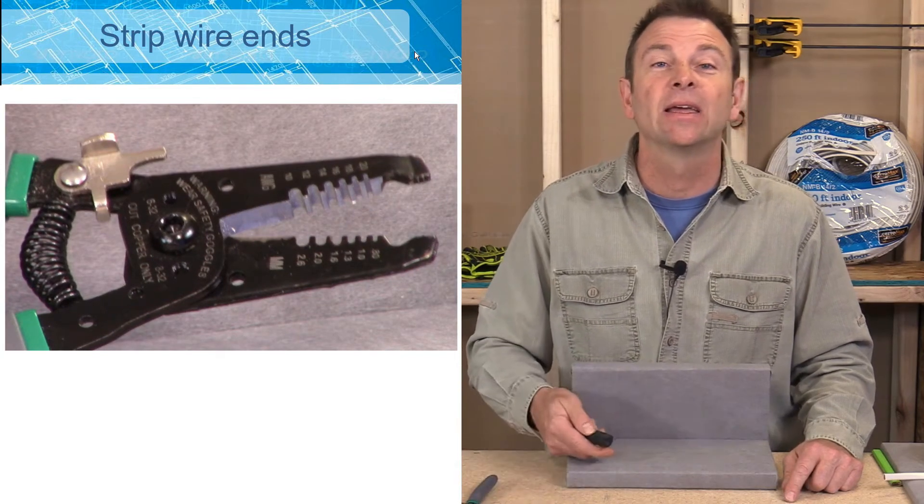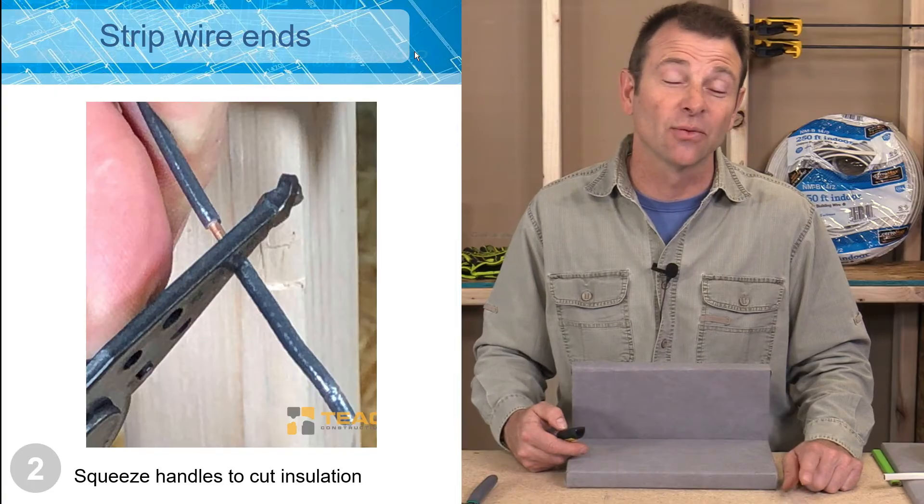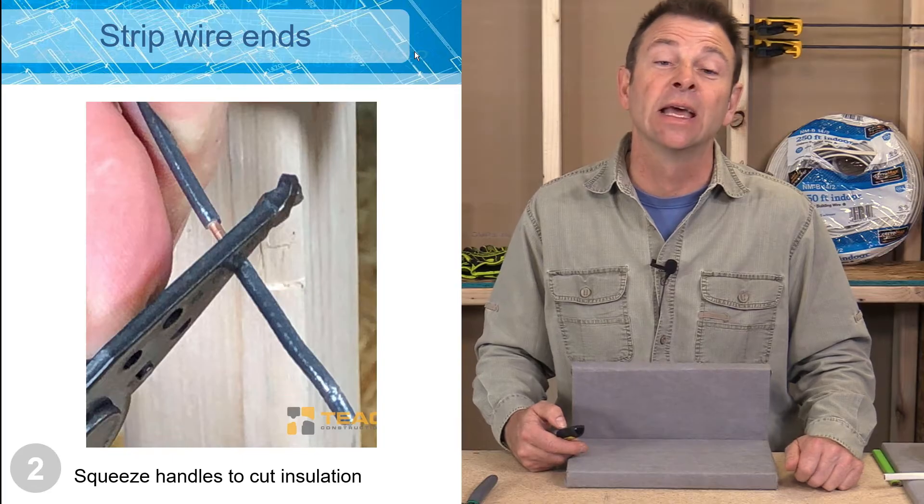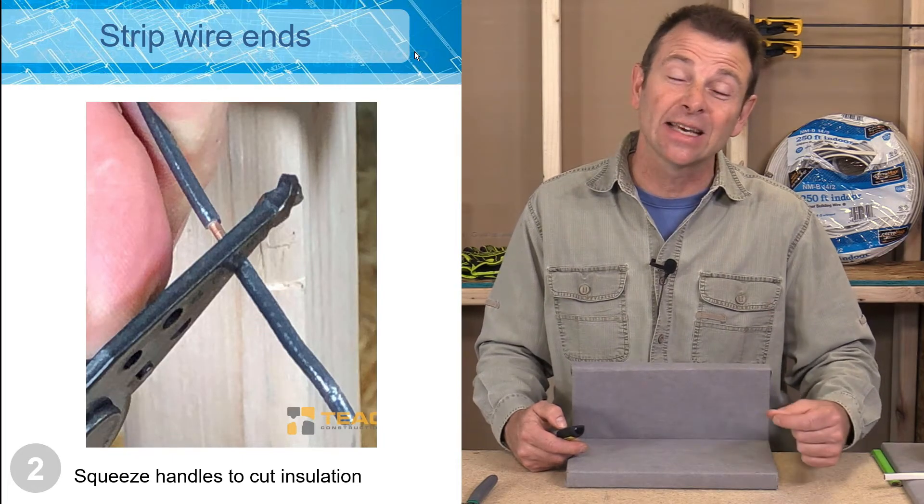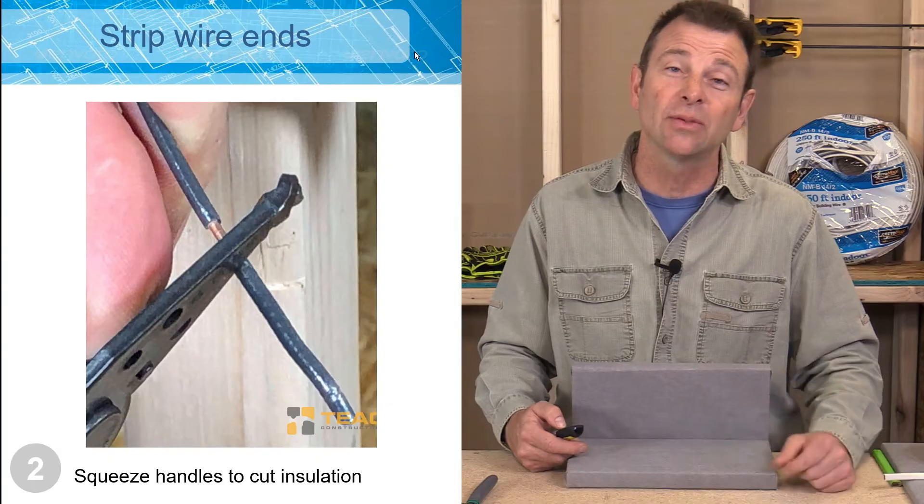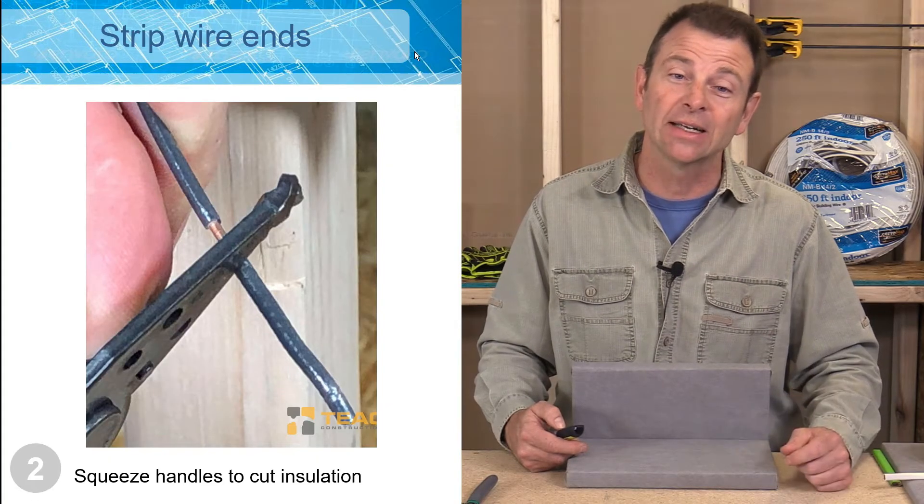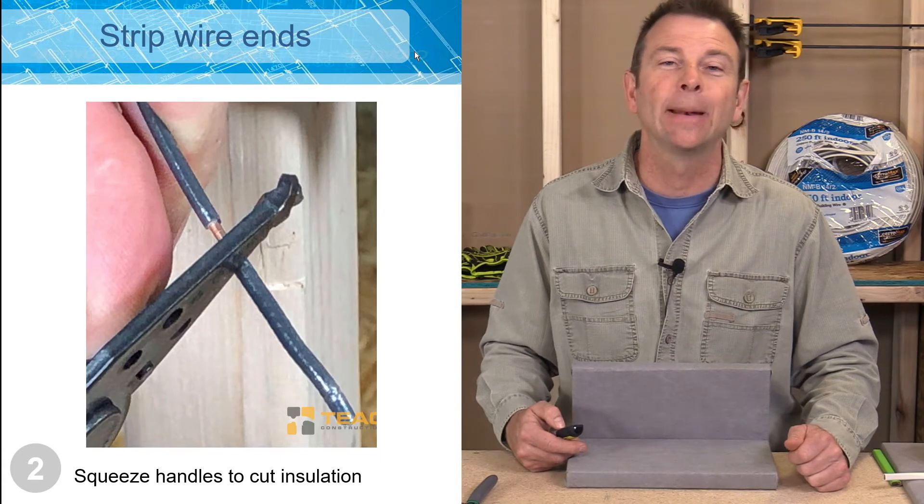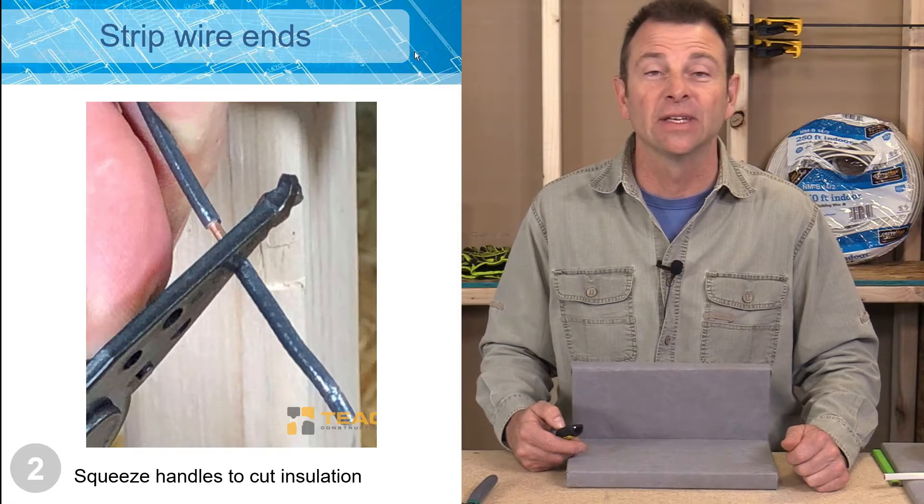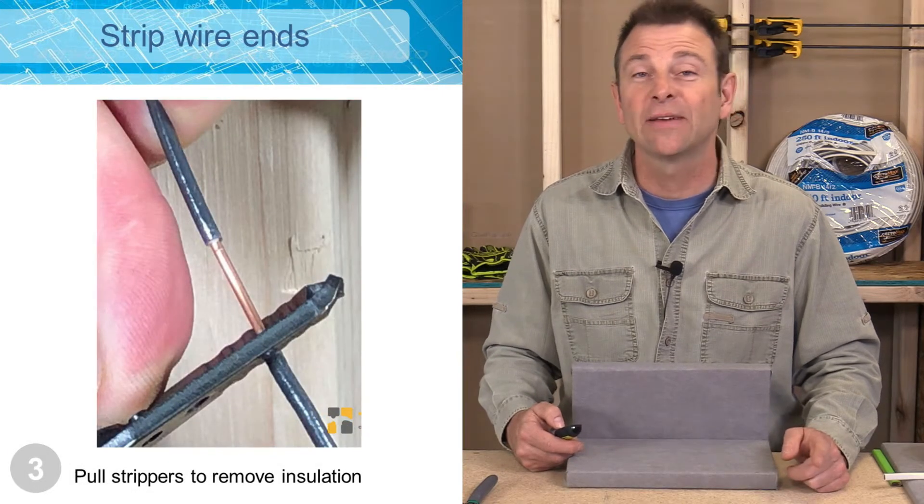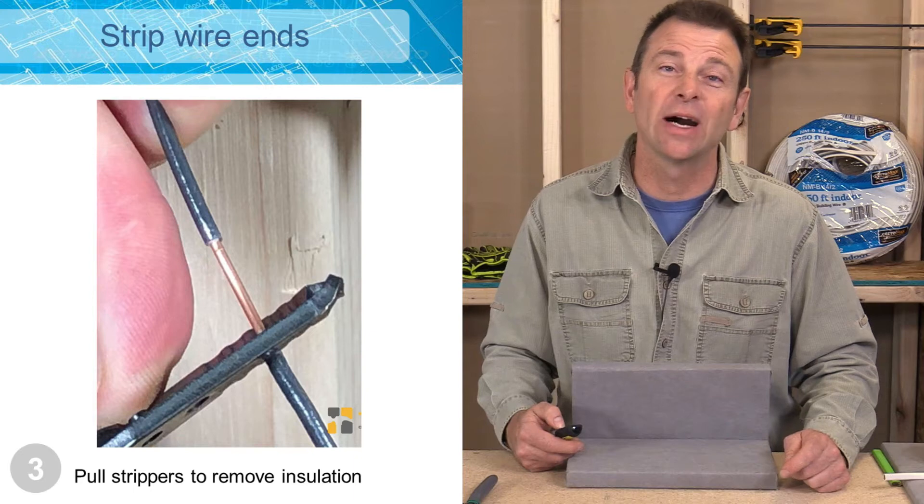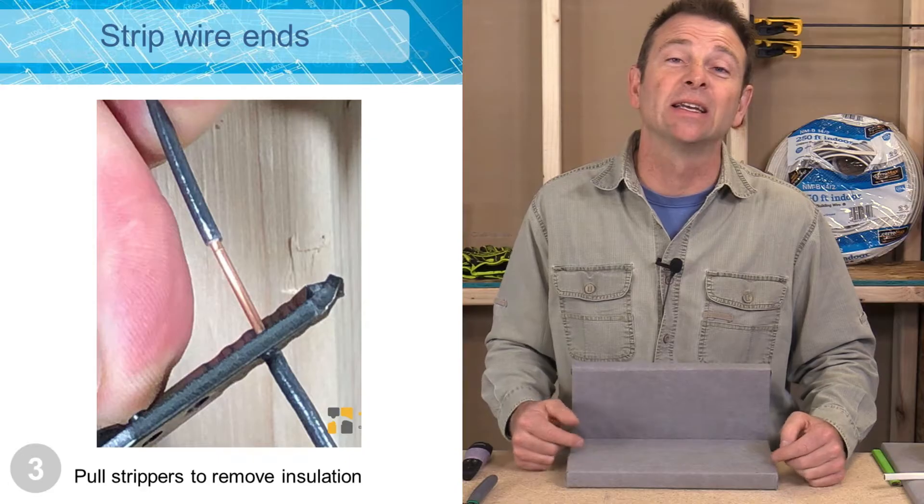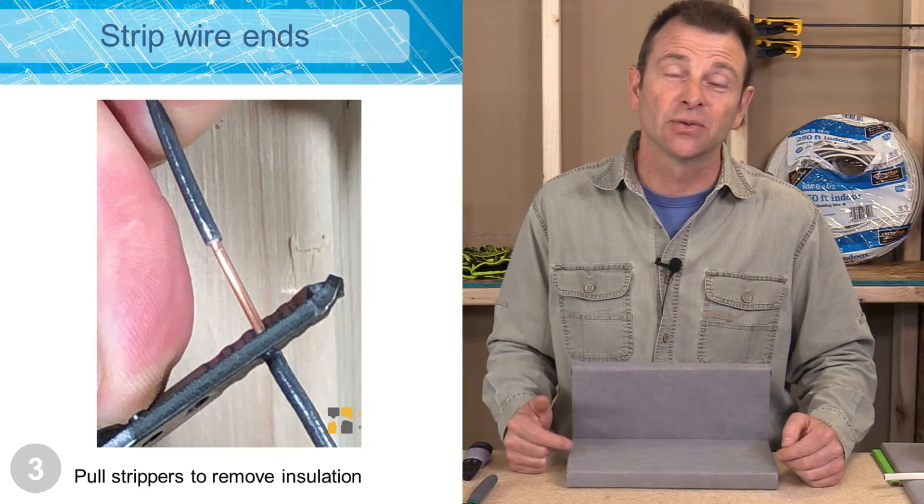So once you get the right notches matched up with the gauge of wire that you're using, you're going to squeeze the pliers together over the insulation. These blades inside of those notches will cut only through the insulation and it will not cut into the conductor. You can then ease up on the handles just slightly and then pull that piece of insulation off of the end of that conductor. What you're left with is a bare end that can then be spliced to another wire or be attached to a terminal connection.